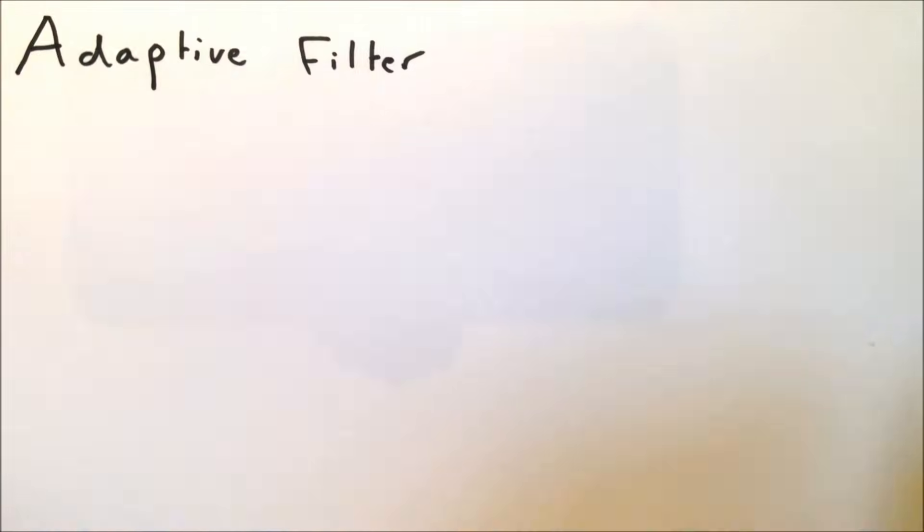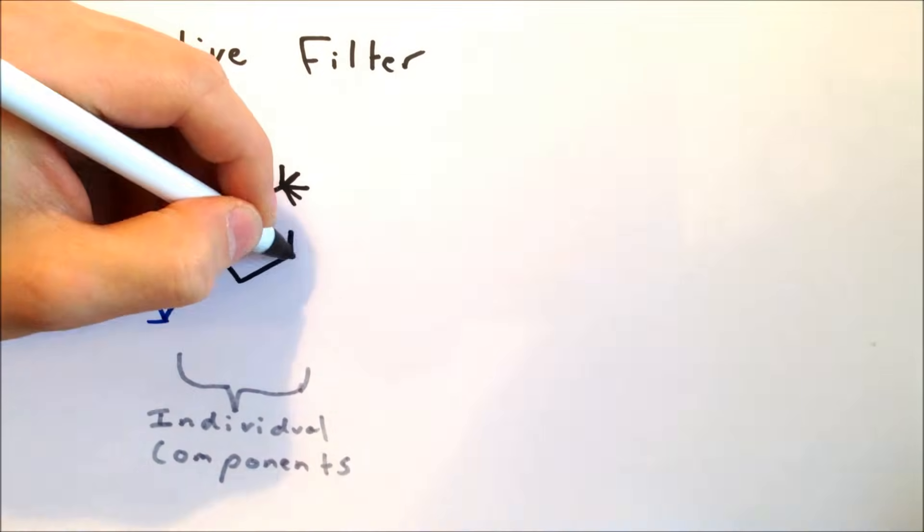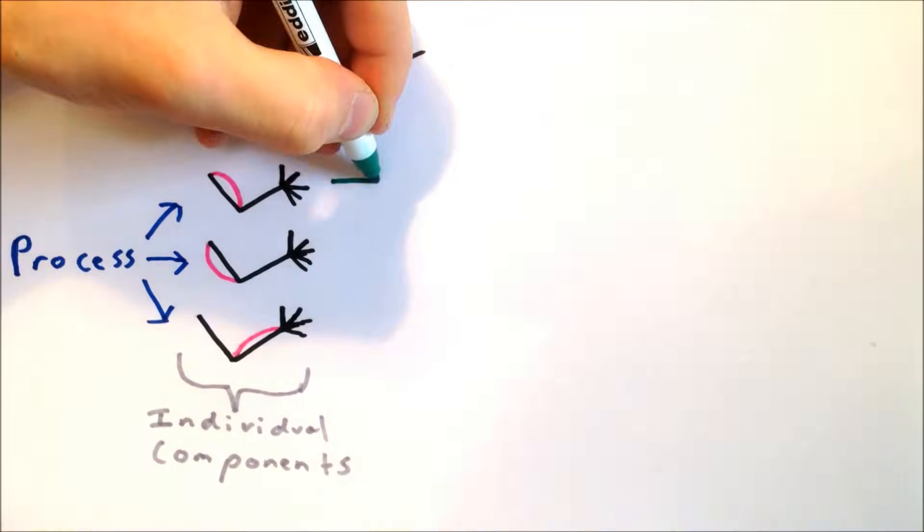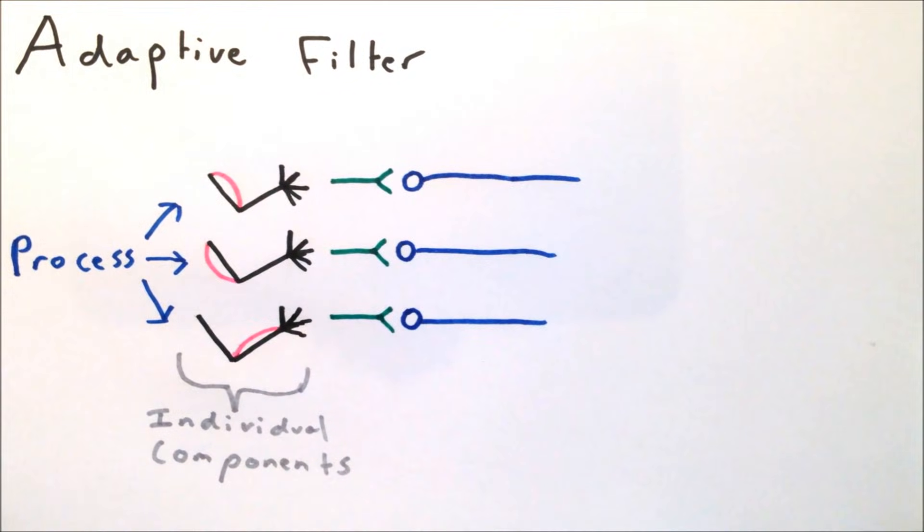This model has recently been generalized into the adaptive filter model of the cerebellum. In this framework, the cerebellum can coordinate any kind of process. Each different component of the process, for example each different muscle in a movement, is decomposed into individual inputs to different parallel fibers.